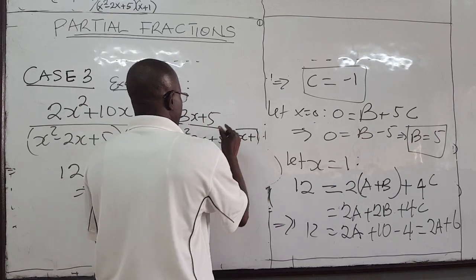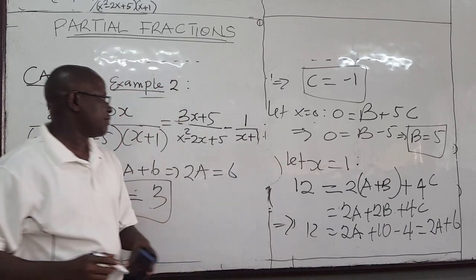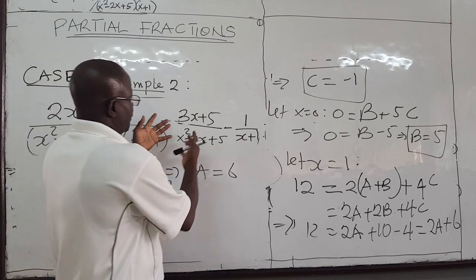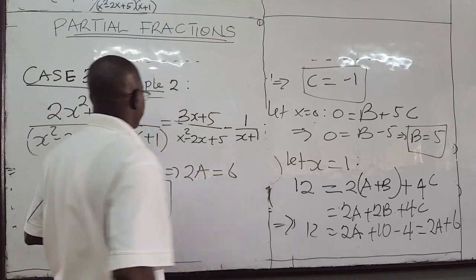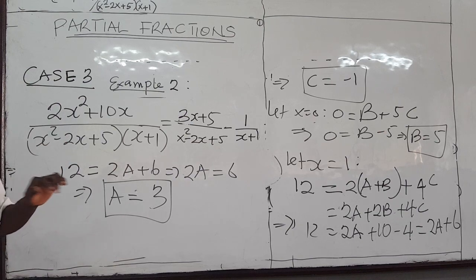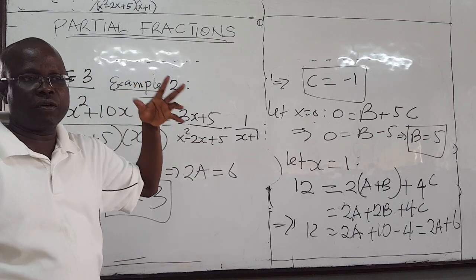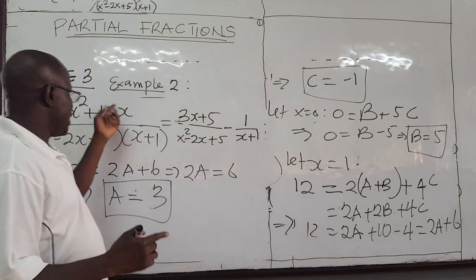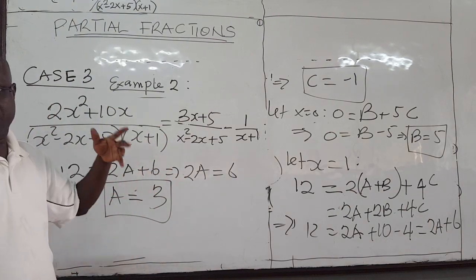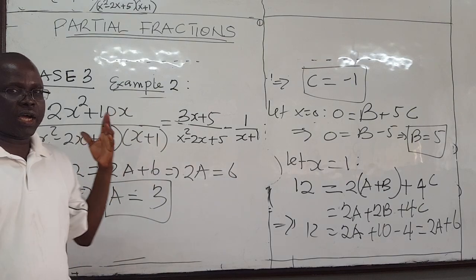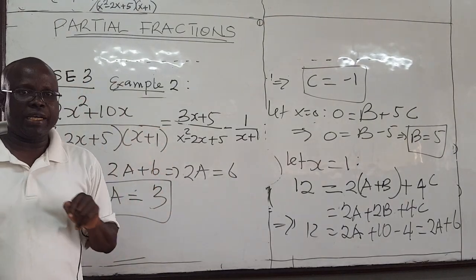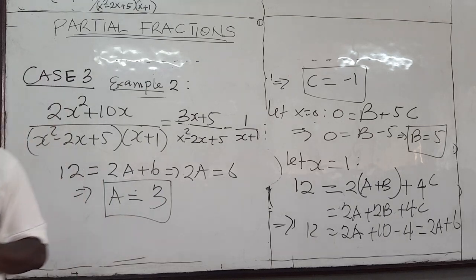So we have a equal to 3, b equal to 5, and c equal to negative 1. Put them back in and that gives you the expression for the partial fraction. Given this expression, you can write it into partial fractions in this way, and that is for Case 3. The next would be Case 4 — or actually Case 5, which is a mixture involving reducible and linear factors. We'll look at one more example of Case 4 and that should wrap up partial fractions.